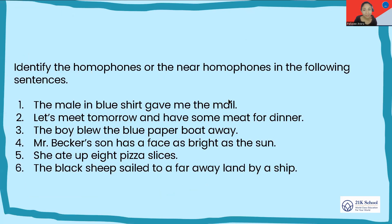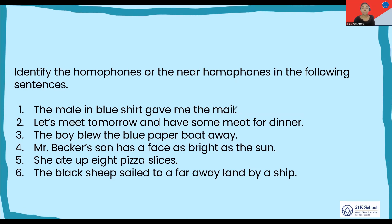Here are six sentences and I would like you to identify the homophones or near homophones in each. The first one: 'The male in a blue shirt gave me the mail.' The homophones used are 'male' and 'mail' — give yourself a smiley! Moving on to the next: 'Let's meet tomorrow and have some meat for dinner.' 'Meet' and 'meat' — if that's what you thought, you're perfectly correct.